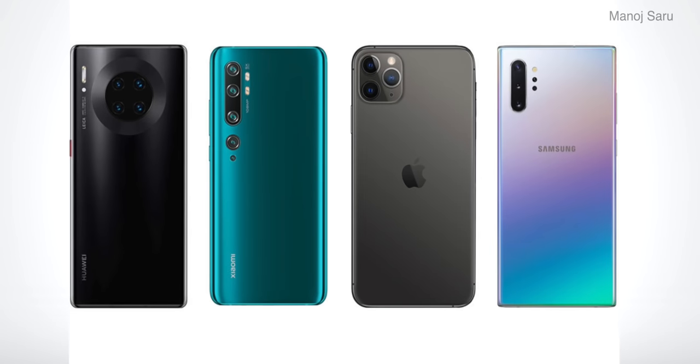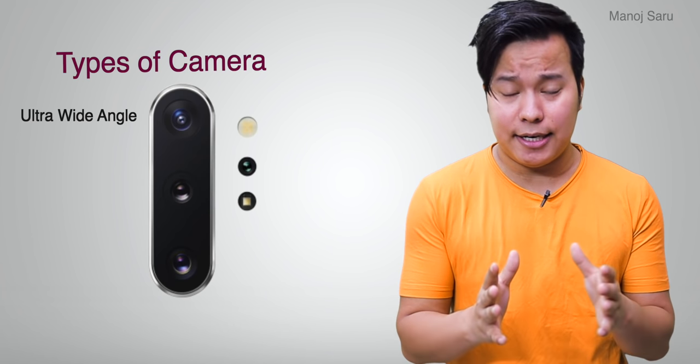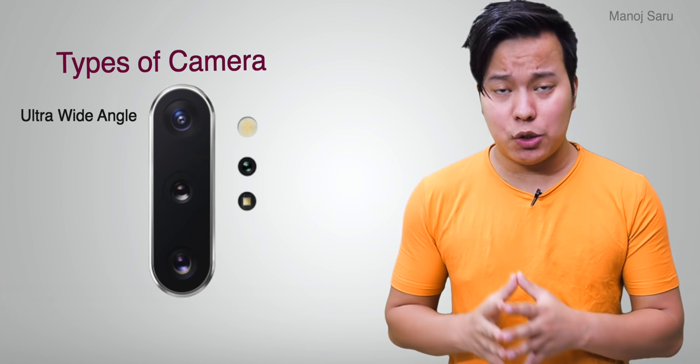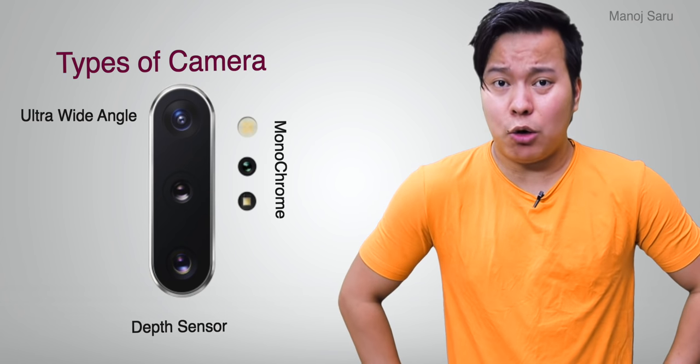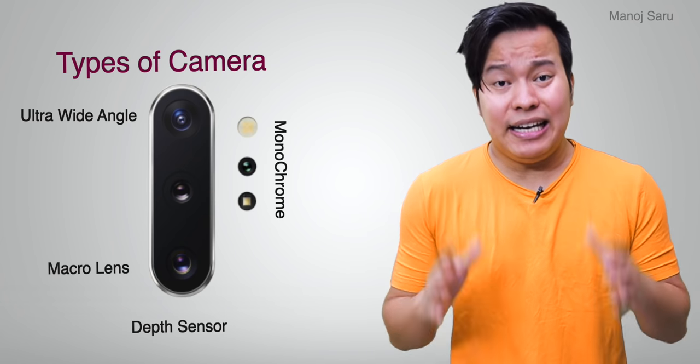There was a time when we were happy with 1 or 2 cameras. But if you look at smartphones today, we have 3, 4, and even 5 cameras. Now you can see different types of camera lenses, like ultra wide angle lens, monochrome lens, depth sensor, macro lens, and telephoto lens.